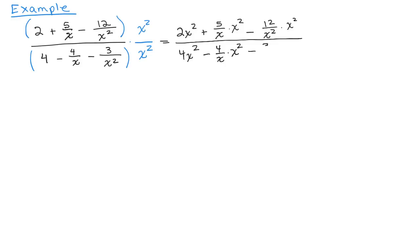Minus 3 over x squared times x squared. All right. So let's simplify everything. We have 2x squared. Now, we have an x squared in the numerator here times the x, so one of those is going to cancel one of those x's and I'll just have 5x, 2x squared plus 5x. And both the x squared here cancel, so I just have a minus 12.